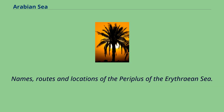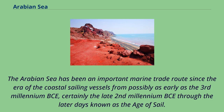Names, routes, and locations of the Periplus of the Erythraean Sea are depicted. The Arabian Sea has been an important marine trade route since the era of coastal sailing vessels, possibly as early as the 3rd millennium BCE, and certainly through the late 2nd millennium BCE and into the later Age of Sail.